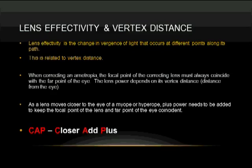Now we're going to look at a term called lens effectivity and vertex distance, which is how to use far points to calculate contact lens powers. This will be on just about every test you ever take. Lens effectivity is a change in light vergence that occurs at different points along its path related to vertex distance.